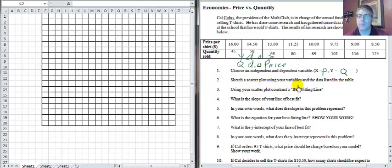Now we want to sketch a scatter plot using the variables and the data listed in the table. We've got our ordered pairs and need to plot them. Before we can do that we need to put together a grid and plot our points. We've got to label our axes and figure out our scales. We know our x is our price, and our y is quantity sold.